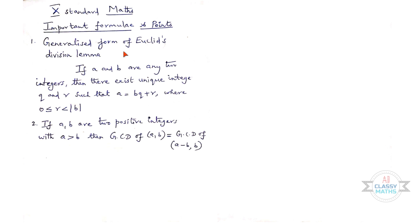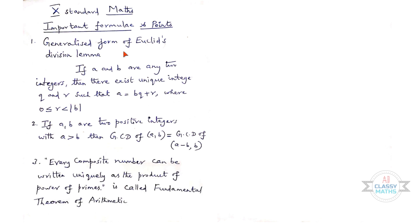Next one: If a and b are two positive integers with a greater than b, then GCD(a, b) = GCD(a − b, b). This is a theorem in Chapter 2.